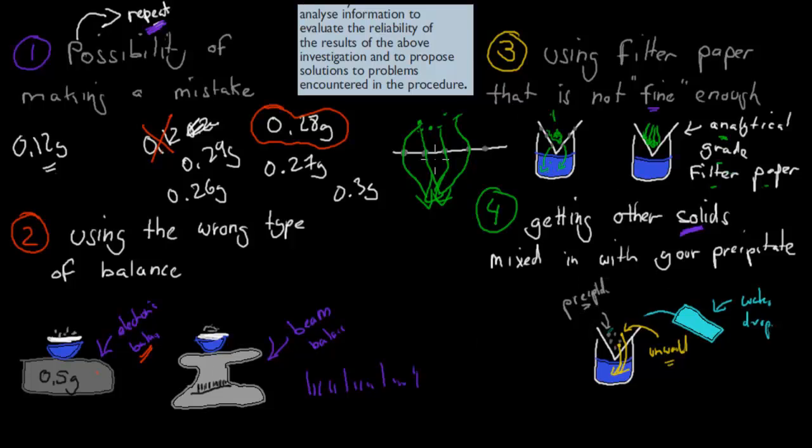So I'll go over the four steps that I mentioned, because the dot point again says, analyze information to evaluate the reliability of the results of the above investigation, and to propose solutions to problems encountered in a procedure. So with the investigation that we did in the last video, even though we tried as best as we can to obviously make it as accurate as possible, overall, we've followed a decent procedure, but there will still be some ways we can improve that procedure, making it more reliable. One way would be to repeat the experiment, and the one we made the last time, last video, we only did it once. If we repeat it, we'll get more reliable results, because the more we do it, the more reliable they are.